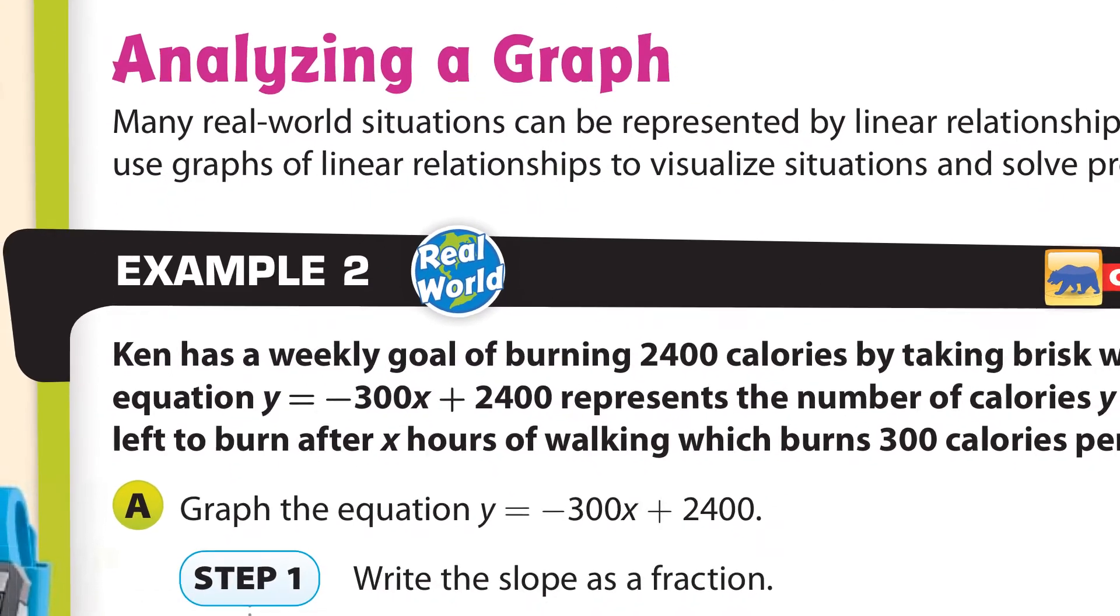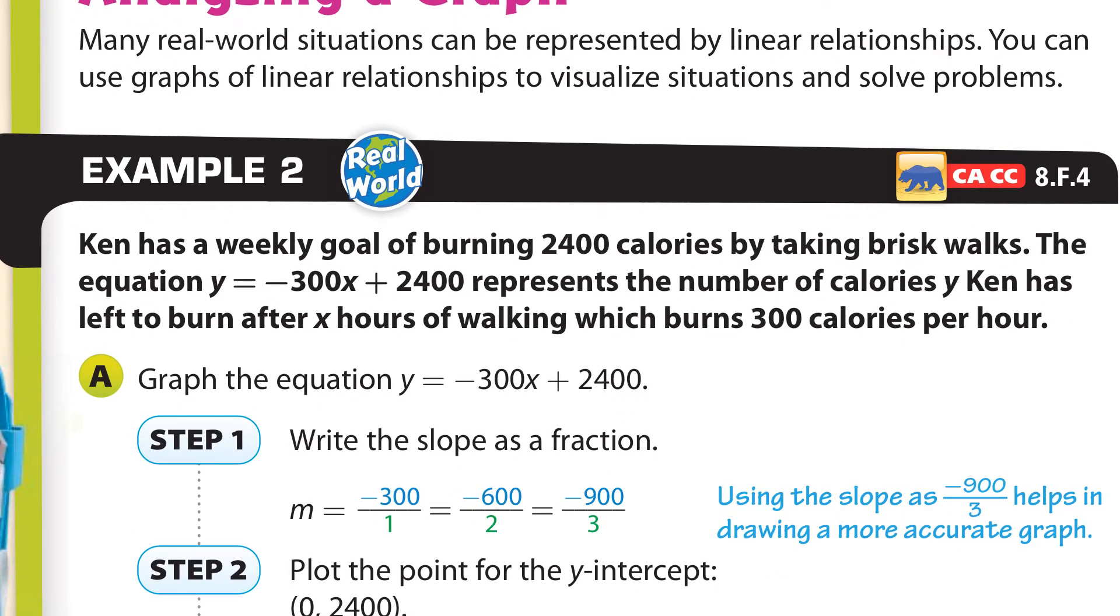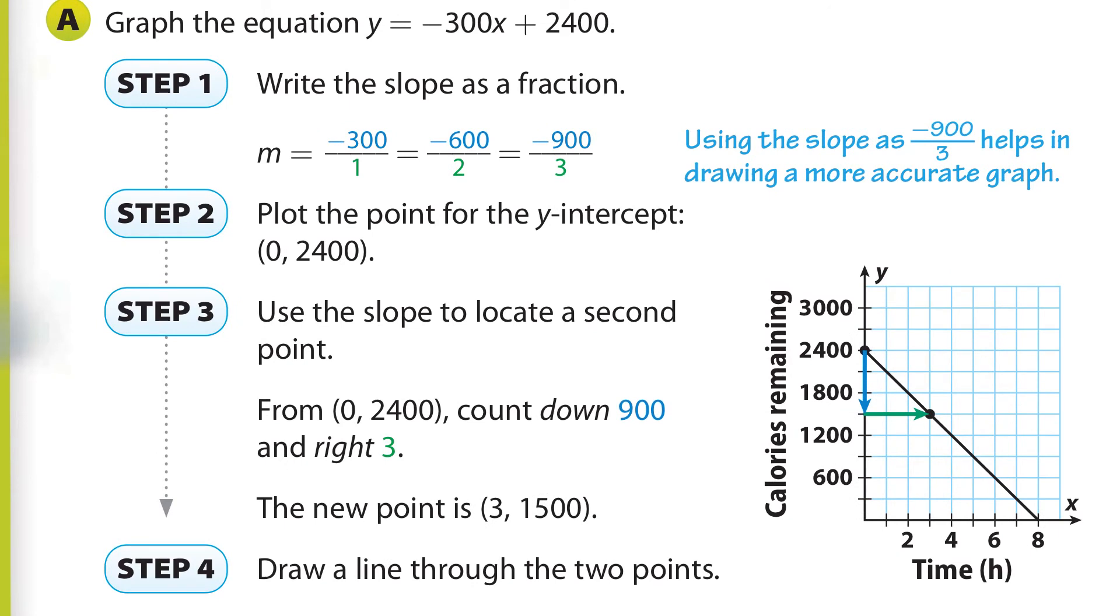So we're going to analyze the graph now. We're going to get into some real-world situations, such as Ken. He's exercising here, and he's burning 2,400 calories by taking some brisk walks. Here's our equation. Y equals negative 300x plus 2,400 represents the number of calories Ken has left to burn after so many hours. So here's our equation. And we're going to be asked to graph this. And we have the slope here, negative 300 over one. Well, we can double these. We can double 300 and double one. We can triple 300 and triple one.